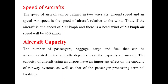The speed of the aircraft can be defined in two ways: ground speed and air speed. Ground speed applies while on the ground during landing and takeoff, while air speed applies when the aircraft is in the air. Air speed is the speed of the aircraft relative to the wind — for example, if the aircraft is travelling at 500 km/h with a headwind of 50 km/h, the air speed is 450 km/h.